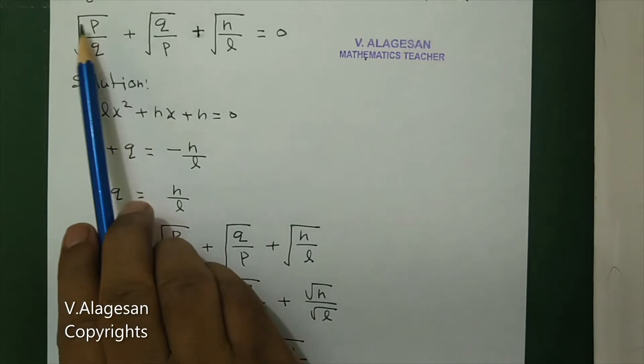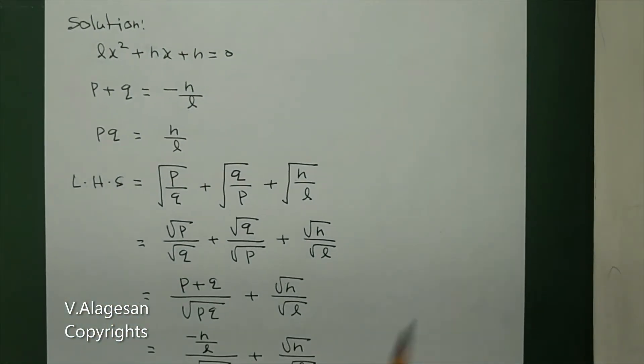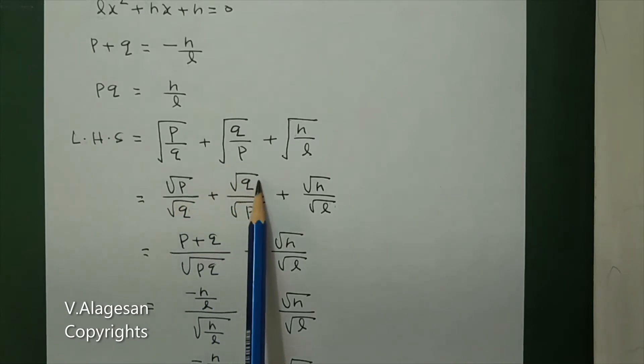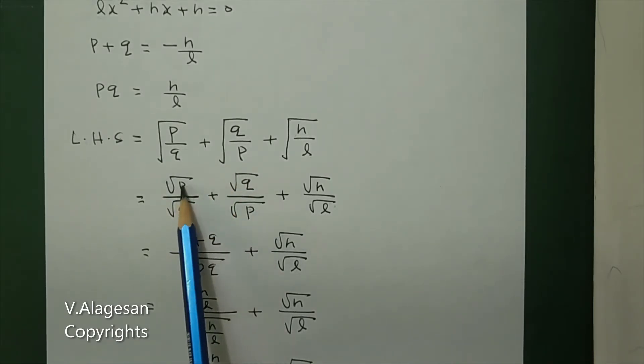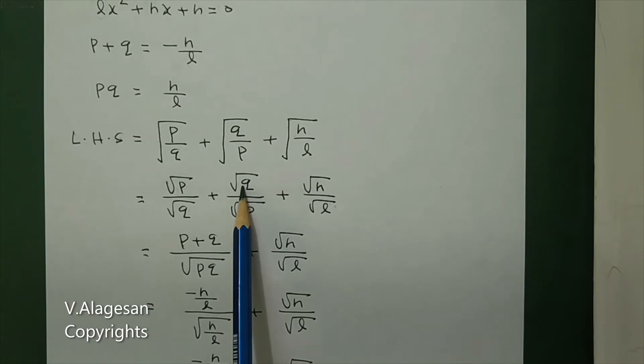Now take the left hand side of the equation: √(p/q) + √(q/p) + √(n/l). For the first two terms, the denominator is the same, so use LCM. Cross multiply: √p × √p is p, plus √q × √q is q. So (p + q) divided by √q × √p, that is √(pq), plus √(n/l).